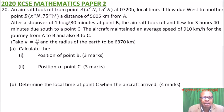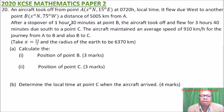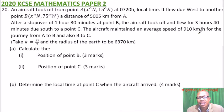This is question number 20. An aircraft took off from point A, which is x degrees north, 15 degrees to the east, at 0720 hours rocket time. It flew due west to another point B, which is x degrees north, 75 degrees to the west, a distance of 5,005 kilometers from A. After a stopover of 1 hour 30 minutes at point B, the aircraft took off and flew for 3 hours 40 minutes due south to a point C. The aircraft maintained an average speed of 910 kilometers per hour for the journey from A to B and also from B to C. Take pi to be 22 over 7 and the radius of the Earth to be 6,370 kilometers.